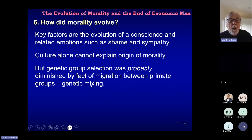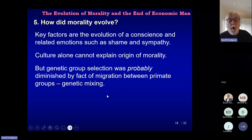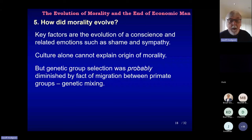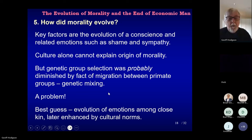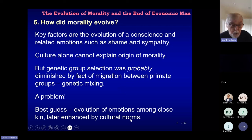Another problem is that genetic group selection was probably diminished by migration between primary groups and genetic mixing. Amongst chimpanzees, for example, females move from one group to another, creating genetic mixing. So the necessary variation between groups is diminished by mixing, and that creates a problem for explanations in solely genetic terms. There's an interesting research issue still not resolved adequately: how do we explain the evolution of morality given that both cultural group selection and genetic group selection have limitations?